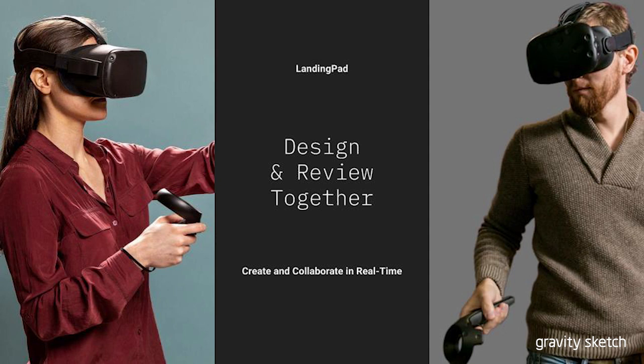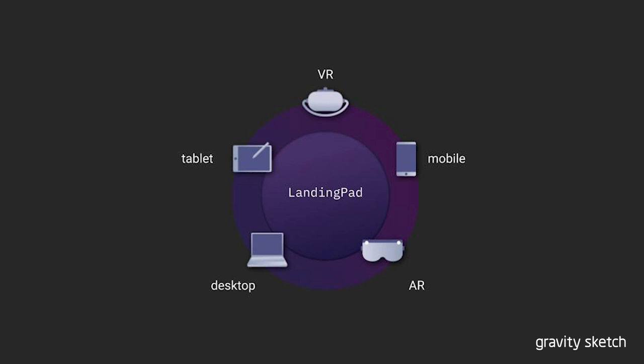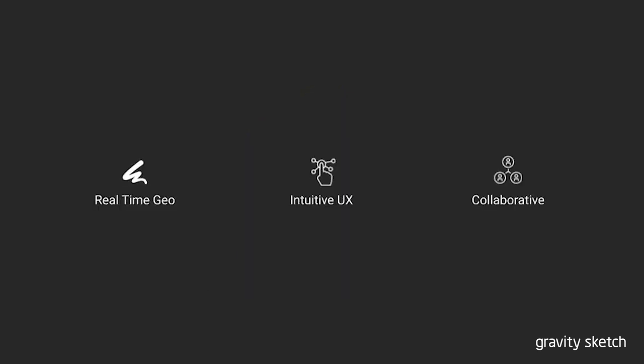That's not just the only component of what we're building. We're also building LandingPad, which is the cloud platform that brings it all together. You can work across different devices — everyone networked and communicating together from the iPad to virtual reality to your desktop computer. From a technology perspective, we're building a real-time geometry engine with subdivision mesh and NURBS-based geometry, all happening at 90 frames per second.